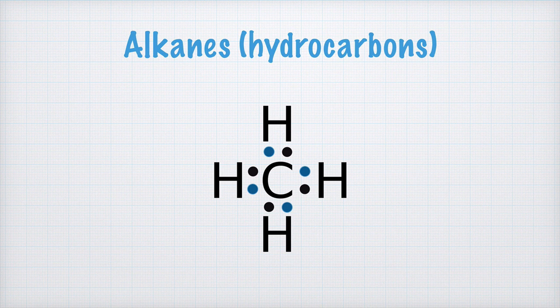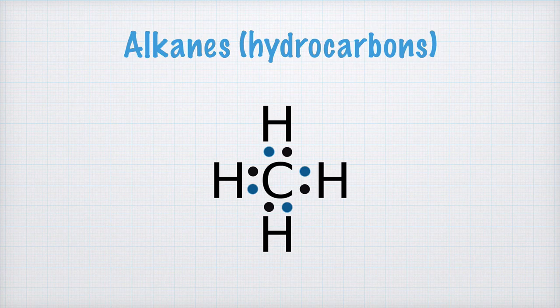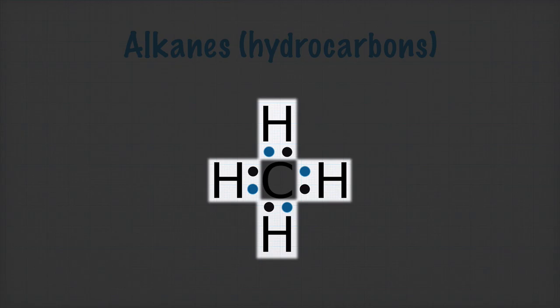Each hydrogen atom has one valence electron, and in this way the carbon atom gets noble gas structure and is, so to speak, satisfied. Also, each hydrogen atom is now satisfied, because they now have two valence electrons each, and thus also have noble gas structure.